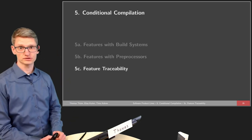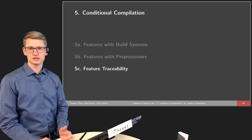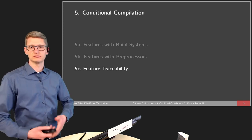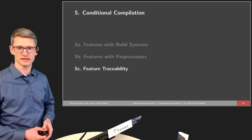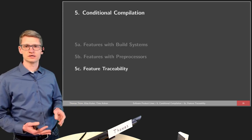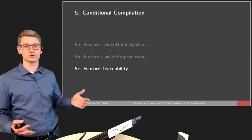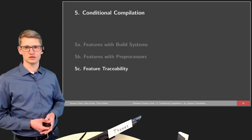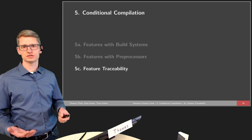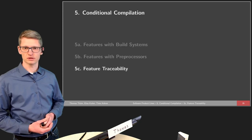Welcome to the third part of the lecture. The lecture in general is about conditional compilation. We talked about how preprocessors and build systems can be used to realize conditional compilation. In this last part, we will talk about some problems in more detail and what is the research point of view on those problems — so what could be potential ways to deal with this in the future. We will talk about feature traceability as one of the common problems that we have whenever we have conditional compilation.